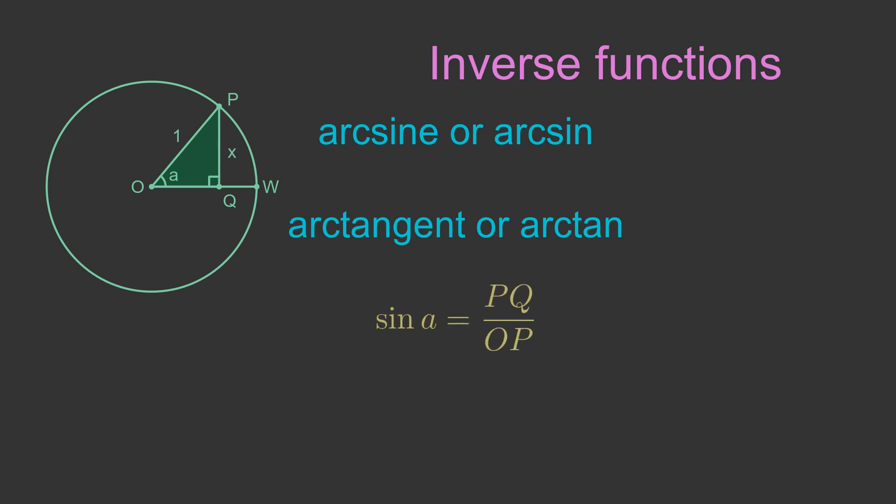The sine of A is opposite over hypotenuse, or PQ over OP in this case. So if we know the angle and one of the sides, we can find the other side. What if we know both sides and we want to find the angle? This is where the inverse sine is useful. Angle A is the arcsine, or inverse sine, of opposite over hypotenuse, or the arcsine of PQ over OP in this example.